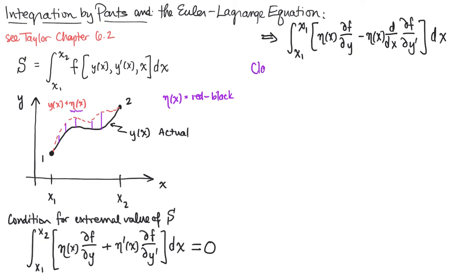So somehow, the claim is that this integral from x1 to x2 of eta prime, which is d eta dx, times the partial with respect to y prime, that somehow equal to minus the integral from x1 to x2 of eta not primed times the derivative of that partial with respect to x now. Integrated over x coordinates.